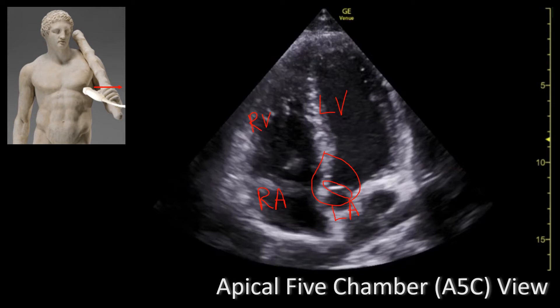What is very important about this view is that the flow of blood is parallel to the ultrasound beam. This means that we can accurately measure the velocity of blood that goes through the left ventricular outflow tract. And if we know the velocity of blood going through the LVOT as well as the radius of the LVOT, we can measure the stroke volume. I will actually have a separate lecture in the future to describe this technique.